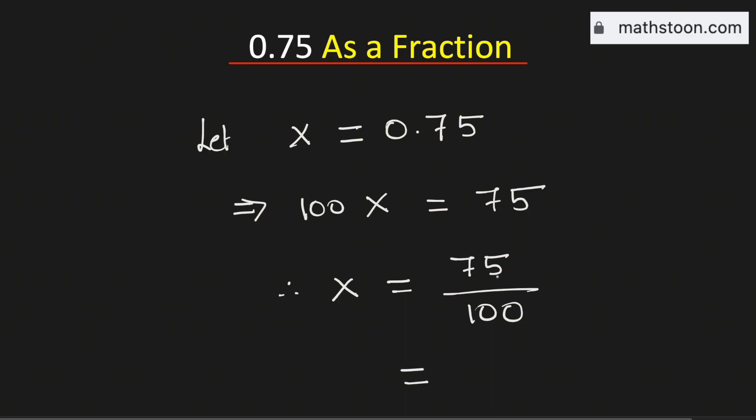Now see that both numbers are divisible by 25. So dividing them by 25, we will get 3 over 4. As 3 over 4 cannot be simplified further,